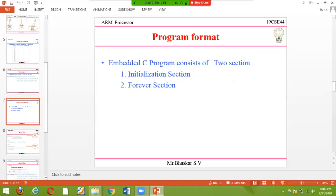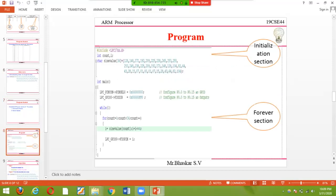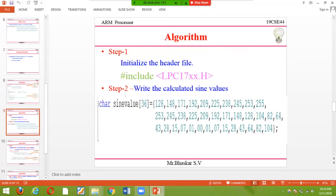When it comes to the program format, there's an initialization section and forever section. In the initialization section, I take an integer count variable and library files. I take a character array called sine value for the 36 values: 128, 148... I've taken it as a character. Initialize the header files with #include lpc1768.h. Write the calculated sine values: sine value is 128h, 104, and so on.